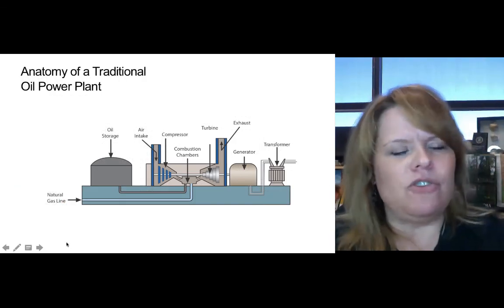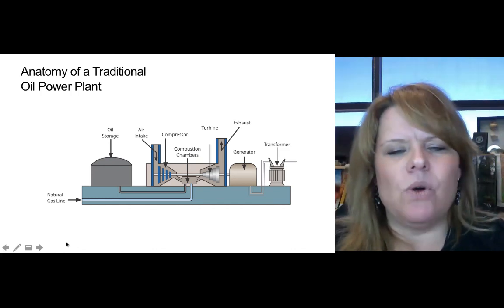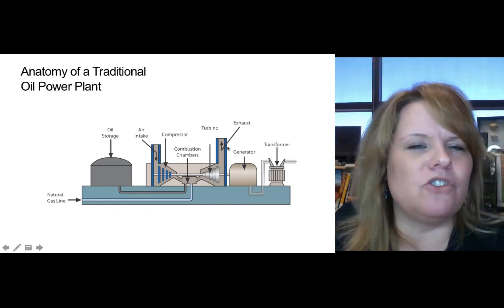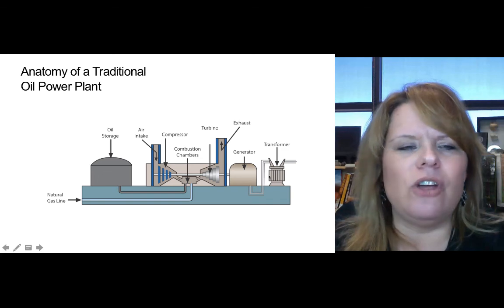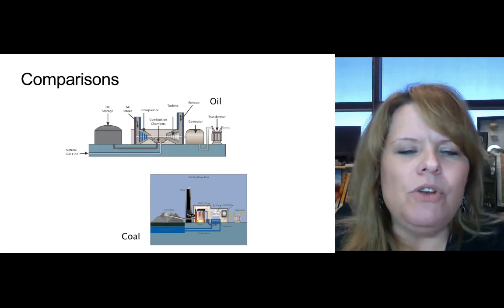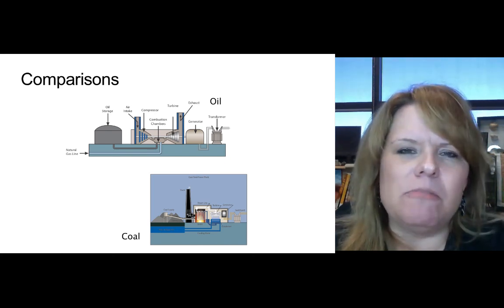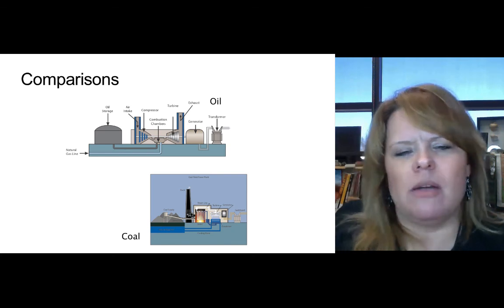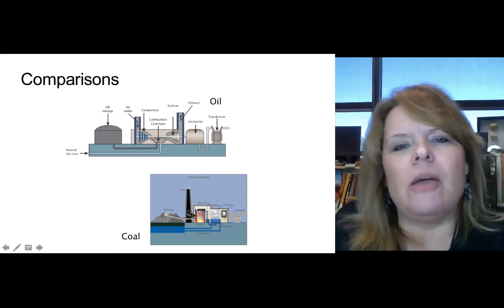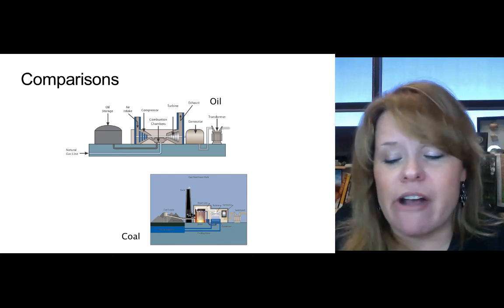The anatomy of a traditional oil plant includes a place to store oil, compression and combustion chambers, an exhaust system with scrubbers, generators, and a transformer to create a power source. When comparing an oil plant to a coal-fired plant, the coal-fired plant has the combustion more enclosed, but at the end of the day they both can create air pollution — which is why there are air standards in place by the Clean Air Act.